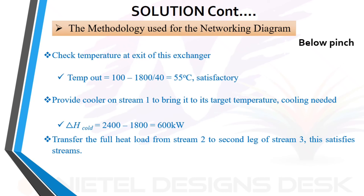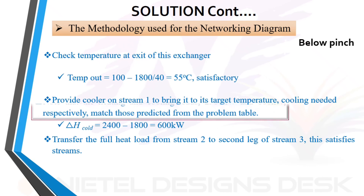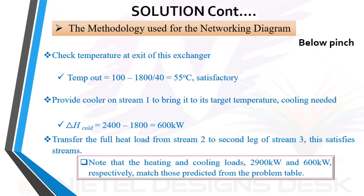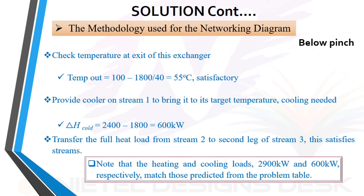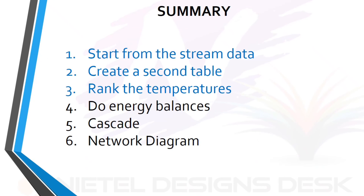Transfer the full heat load from stream 2 to the second leg of stream 3. This satisfies both streams. Note that the heating and cooling loads — 2900 kilowatts and 600 kilowatts respectively — match those predicted from the problem table. Thank you for watching; don't forget to like, subscribe, and share.